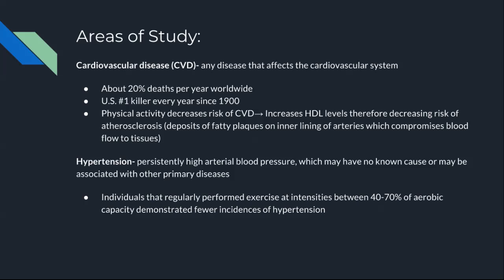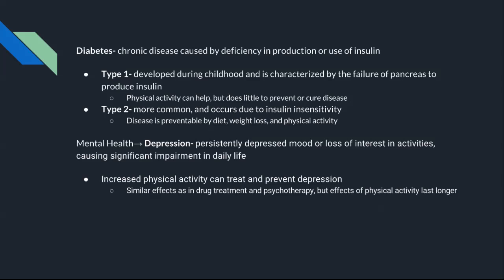Another area of study is diabetes, which is the chronic disease caused by deficiency in production or use of insulin. There are two types. Type 1 is developed during childhood and is characterized by failure of the pancreas to produce insulin; physical activity can help, but does little to prevent or cure it. Type 2 is more common, usually occurs later in adulthood due to lack of insulin sensitivity, and is preventable by diet, weight loss, and physical activity.